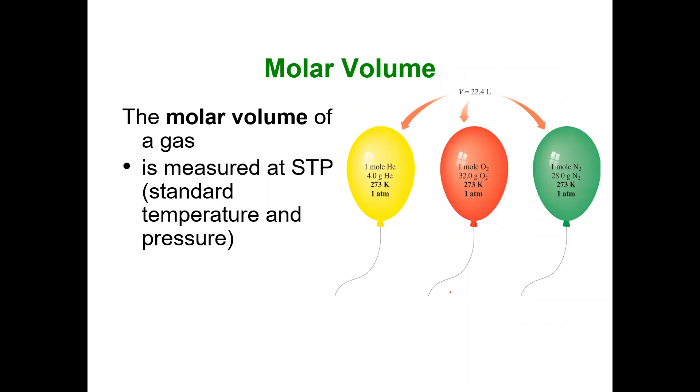So now we're taking into account Avogadro's Law. That volume is directly proportional to the number of moles. And if you measure one mole of any gas at these set of conditions of standard temperature and pressure, we end up getting the same volume. And that volume is one mole of any gas is 22.4 liters.